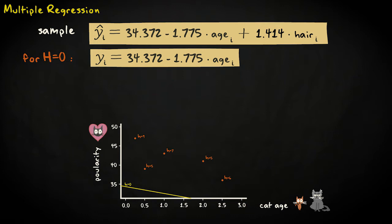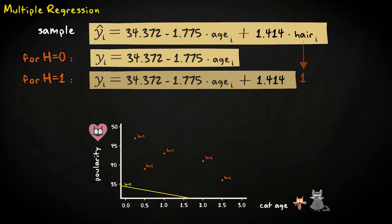Now consider the relation for a hairiness score of 1. If we enter a hairiness score of 1 in the equation, we get y hat sub i equals 34.372 minus 1.775 times age sub i plus 1.414, which equals 35.786 minus 1.775 times age sub i.